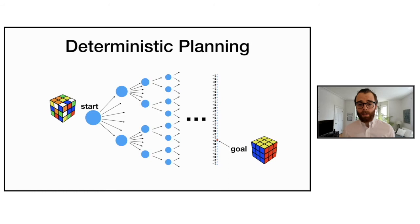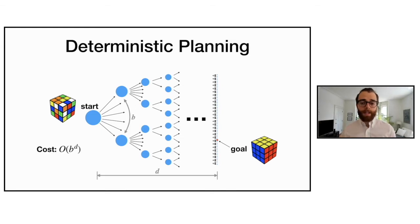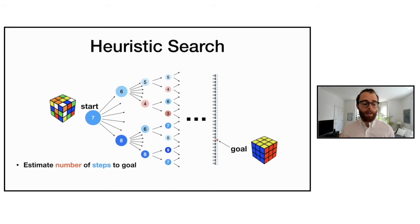We can visualize deterministic planning as a search tree, where our objective is to go from some arbitrary starting configuration — in this case a scrambled Rubik's Cube — to some desired goal configuration. The cost of deterministic planning is exponential in the depth of this search tree, and one way to ease the computational burden is to use heuristic search, which estimates the number of steps to the goal and allows best first search expanding nodes based on the heuristic value.